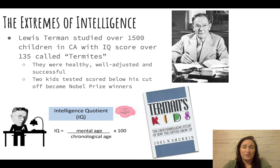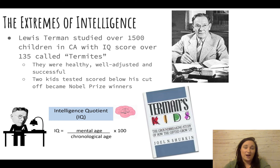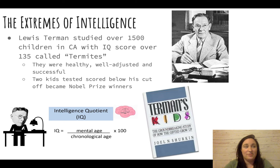While many assumed people with superior IQs would be awkward and antisocial, the Termites were actually the opposite — healthy, well-adjusted, and successful, many becoming lawyers and doctors. Notably, two children who did not score high enough to qualify as Termites went on to become Nobel Prize winners, illustrating that an IQ score is just a number with real limitations.